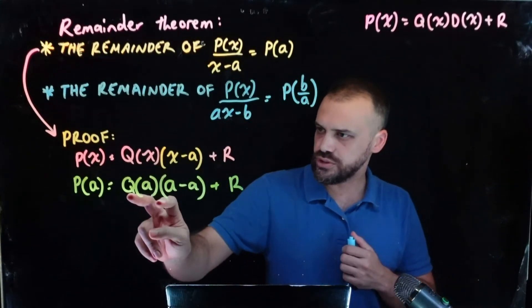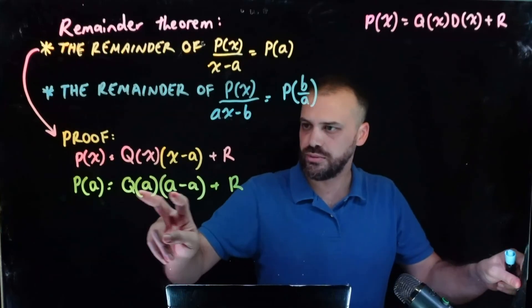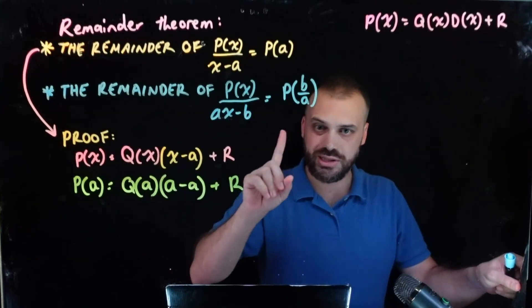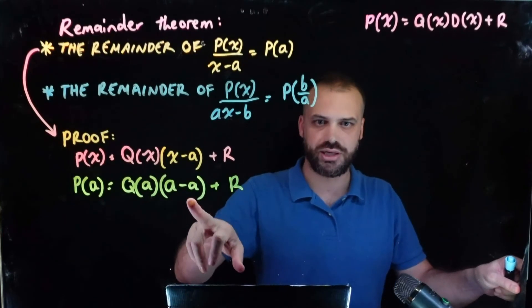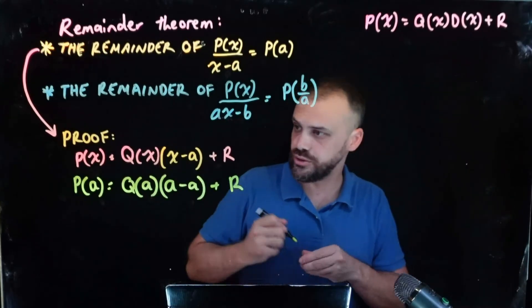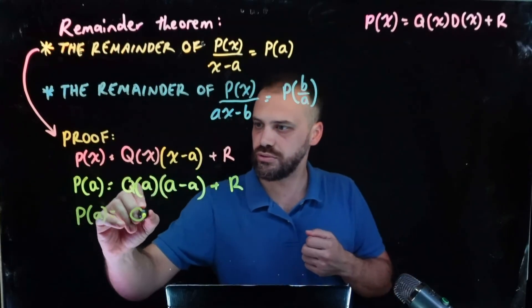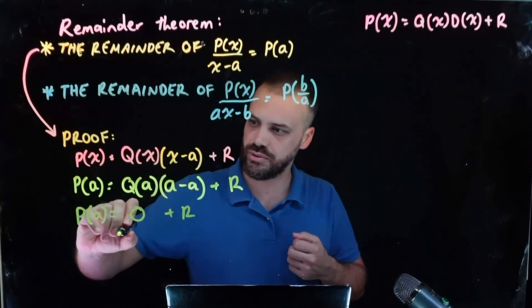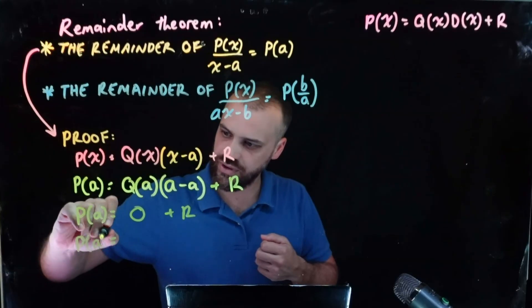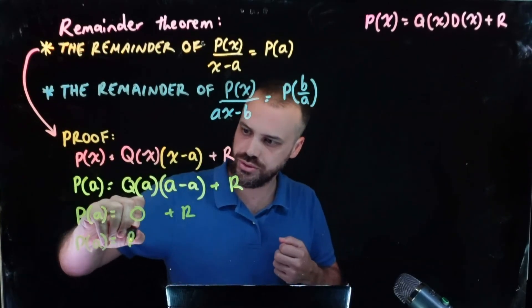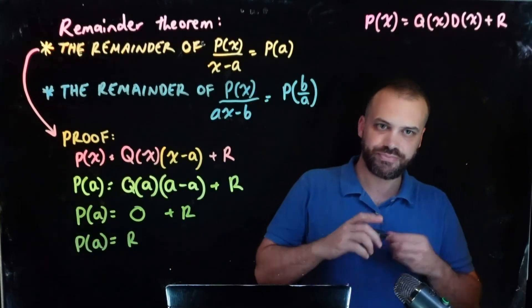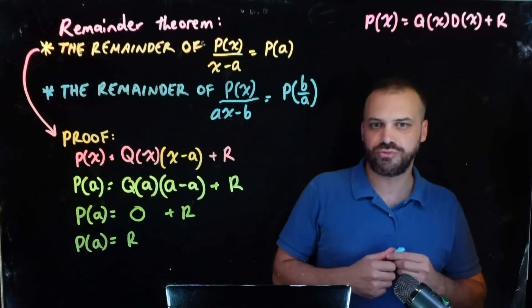And what do you notice? Well, we've got some sort of quadratic here, but we've got this linear factor which has now become a minus a. Now a minus a is zero. So that means that p(a) is equal to zero plus the remainder, which means that p(a) will always be equal to the remainder. Alright, a neat little proof here.